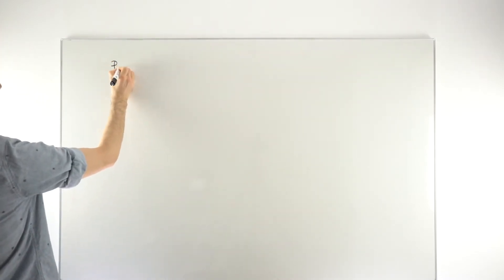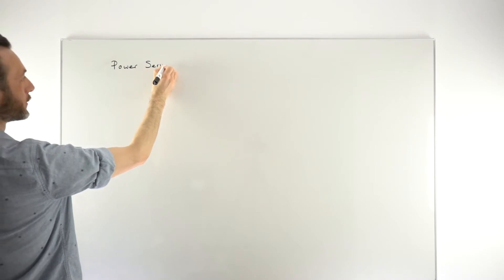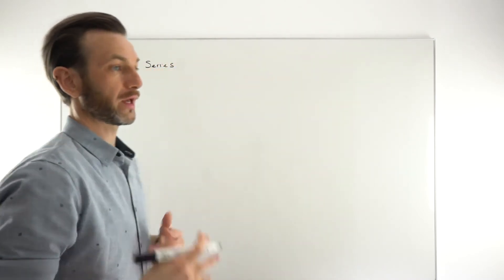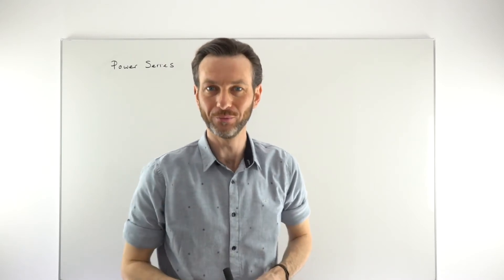In this video we're going to consider the Maclaurin series expansion for the exponential function e to the x. We're going to use this example to help us consider in more general terms what a Maclaurin series is, and we'll chat about some of the things we can do with a Maclaurin series. A Maclaurin series is an example of a wider form called a power series, which is an infinite series in which we use ascending powers of the variable — usually the x term — to represent some function.